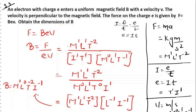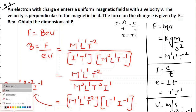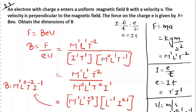Now we multiply the denominator values: dimensions add up, so M0 remains, L1 remains, T has 1 and minus 1 so T becomes 0, and I has power 1. Since this is in the denominator, we take it to the numerator and it becomes inverse. So the numerator is M1 L1 T minus 2, and after bringing L1 and I1 from denominator up, we get B equal to M1 L0 T minus 2 I minus 1.